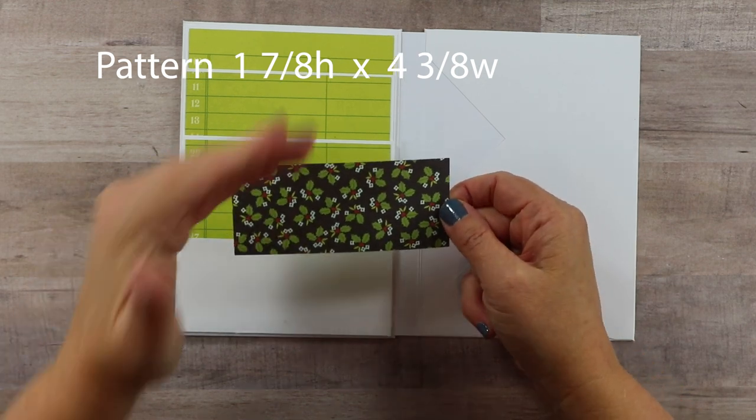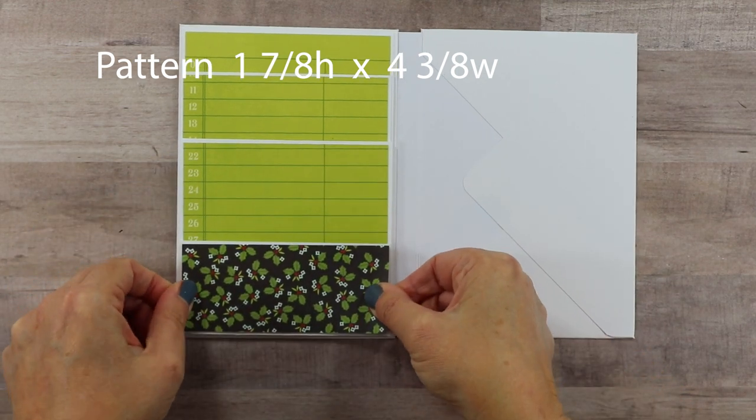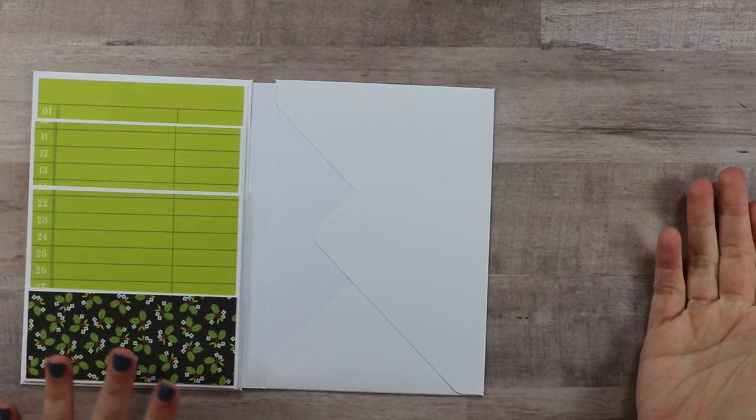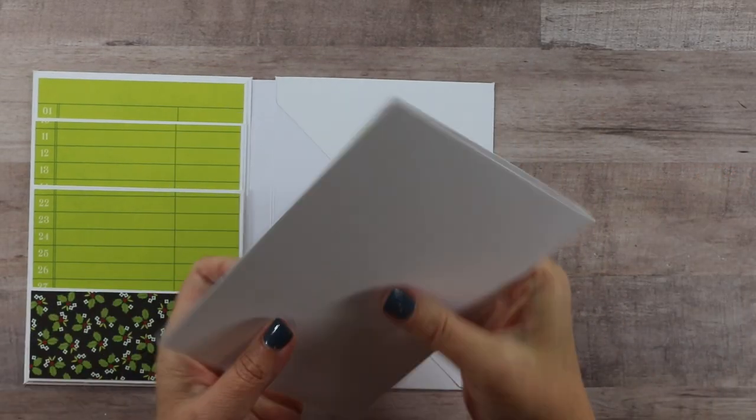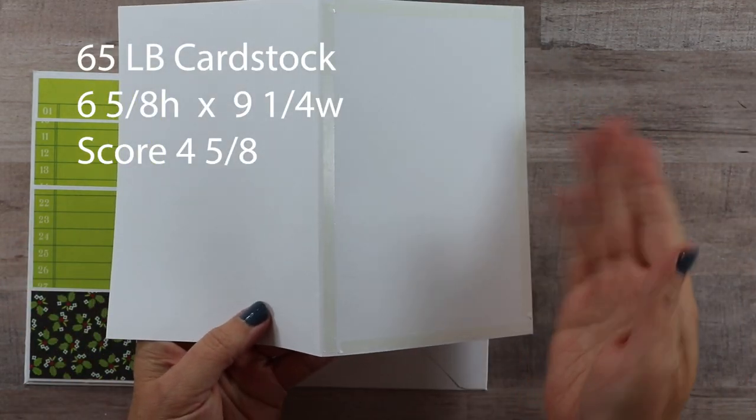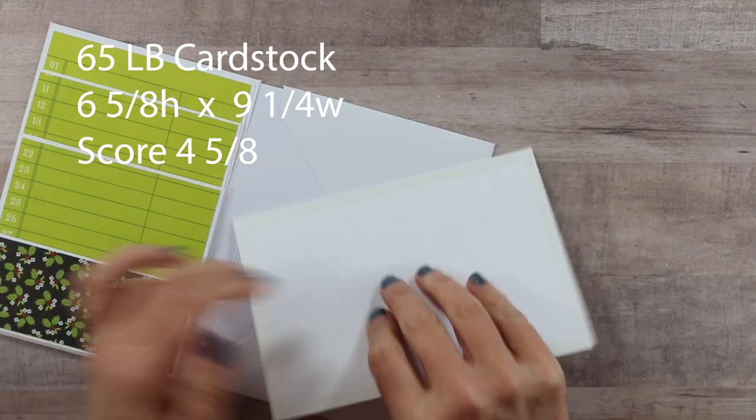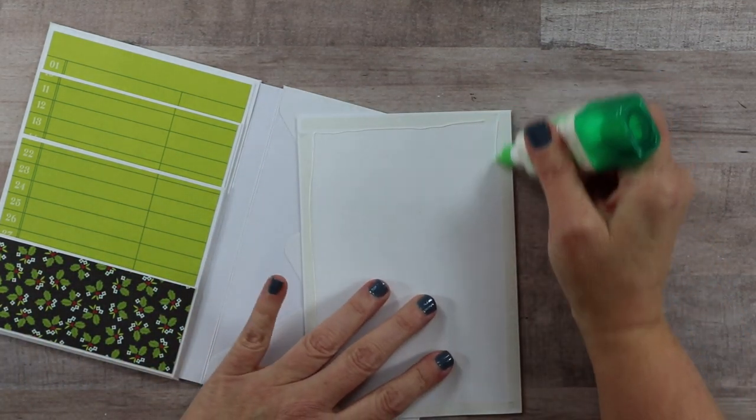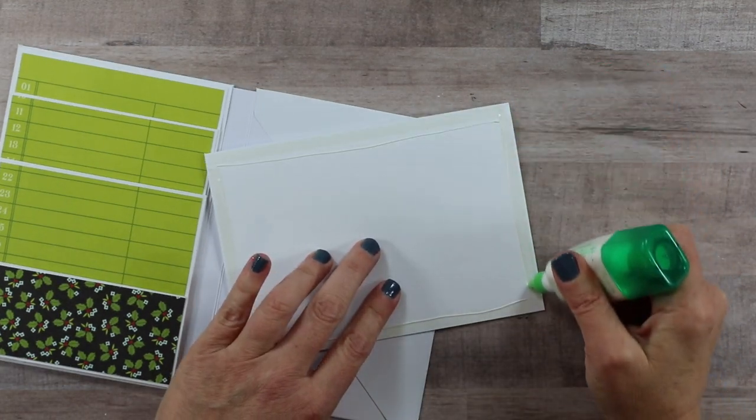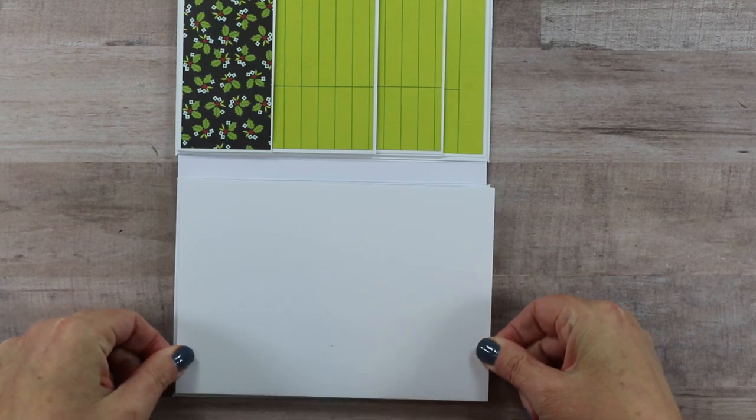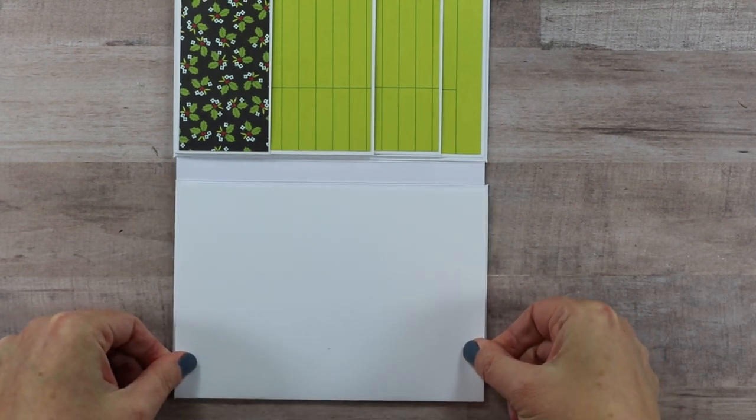For the right-hand side, this is going to be a full-size page flip. So our cardstock is six and five-eighths by nine and a quarter, scored at four and five-eighths. And I'll just add this to the right-hand side. This is another place for two glues, and I'll line that up along those score lines.